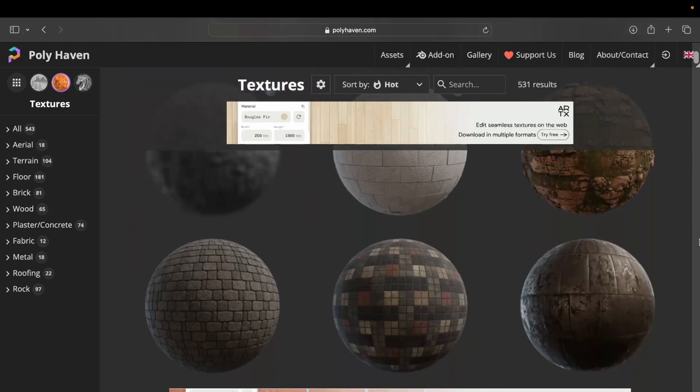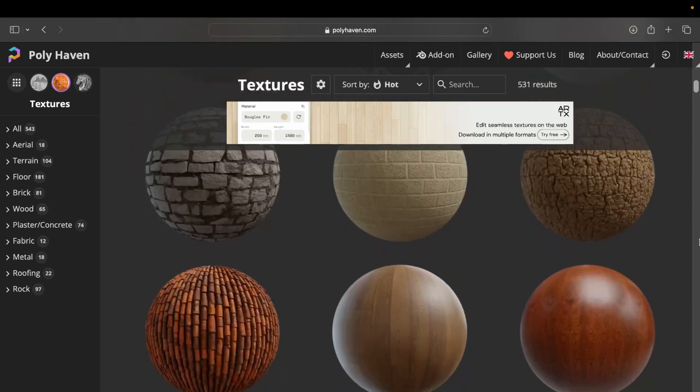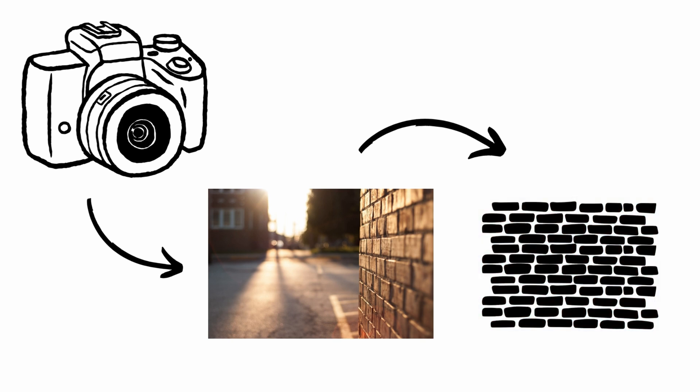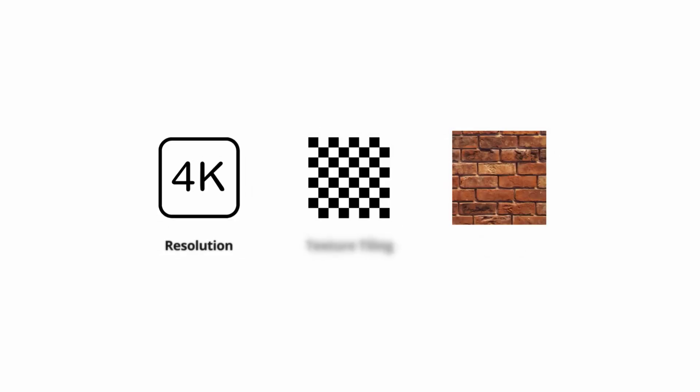High quality textures are essential for creating convincing materials. If you're an absolute beginner, you can get started by grabbing some free materials off Polyhaven, or if you're up to it you could even make your own by taking photos of a real world surface and reproducing that in Blender. When sourcing or creating textures, you really want to pay attention to resolution — I like to go 4K — texture tiling, and any kind of variety within the texture, because that will create repetition and break the illusion of realism.